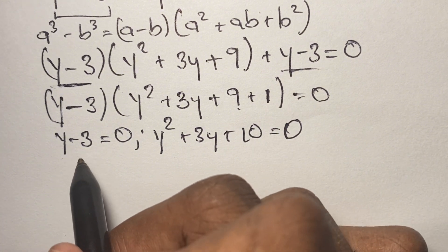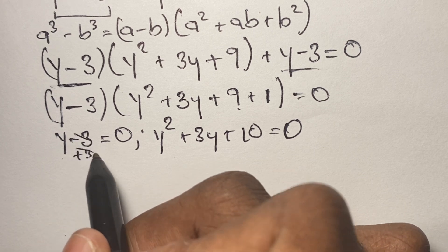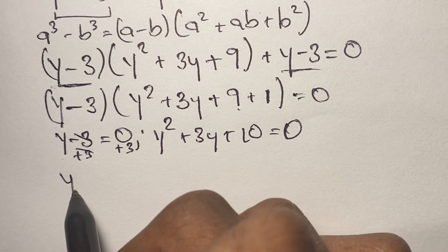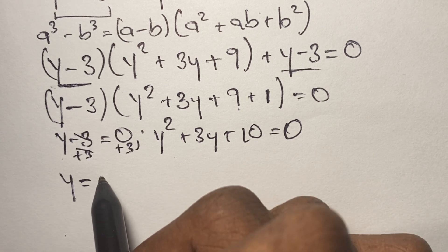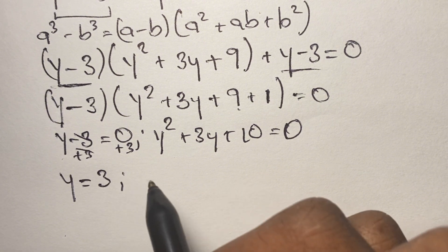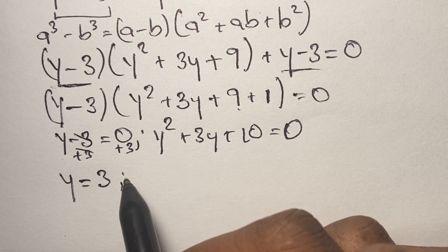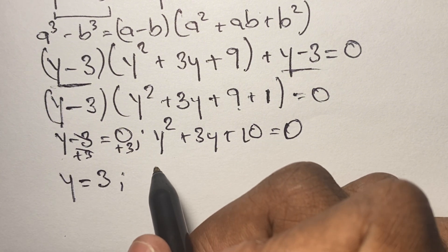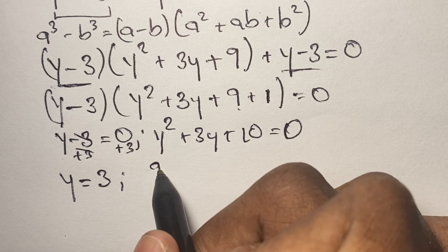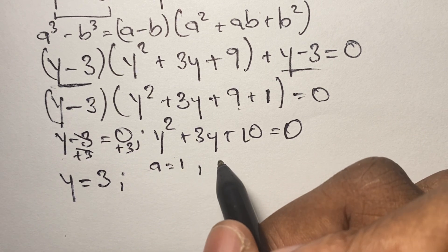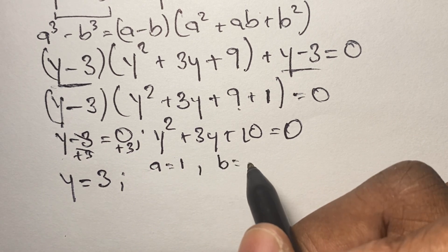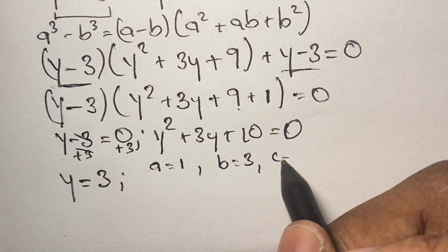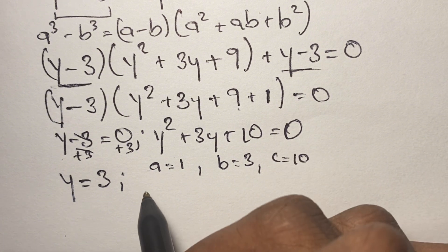From y minus 3 equals 0, we add 3 to both sides — the 3s cancel on the left — giving y equals 3. For the quadratic y squared plus 3y plus 10 equals 0, we identify a equals 1, b equals positive 3, and c equals 10.